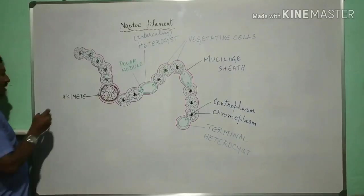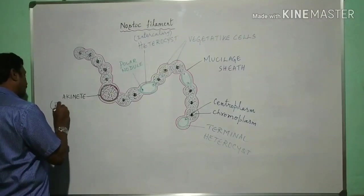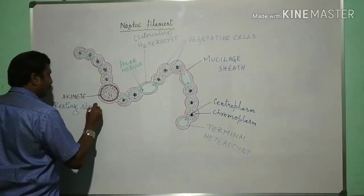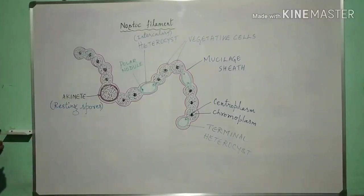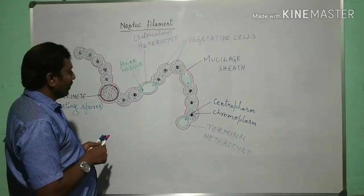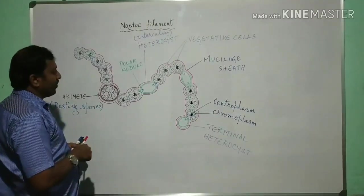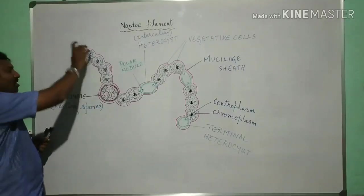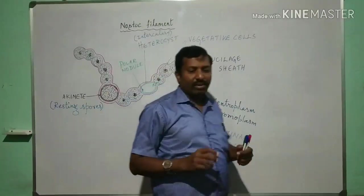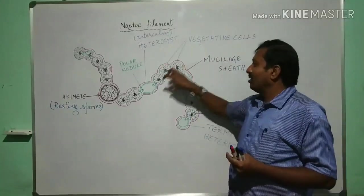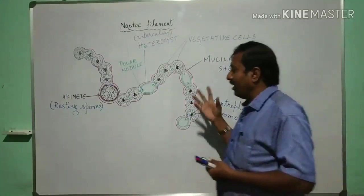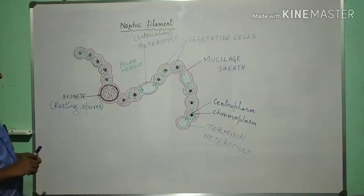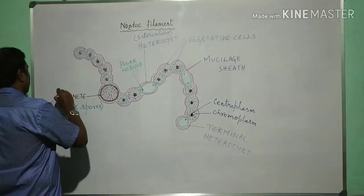Sheath and akinetes are also called thick walled resting spores. Here you can find very clearly the filament containing unbranched chain of cells and three types of cells you will find here, one is akinete.